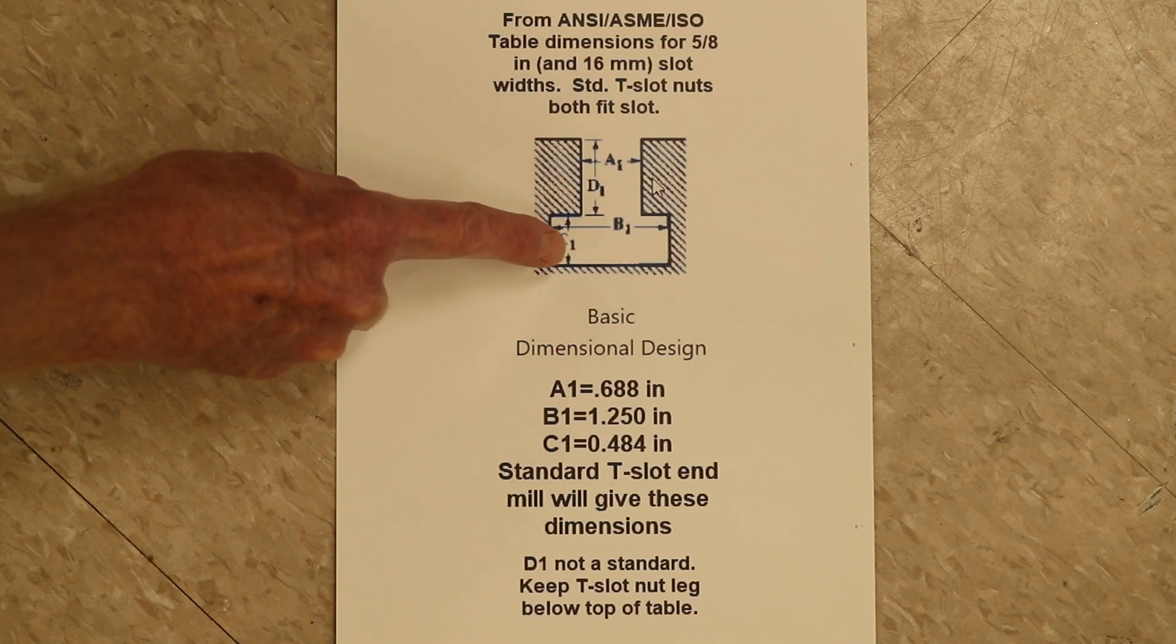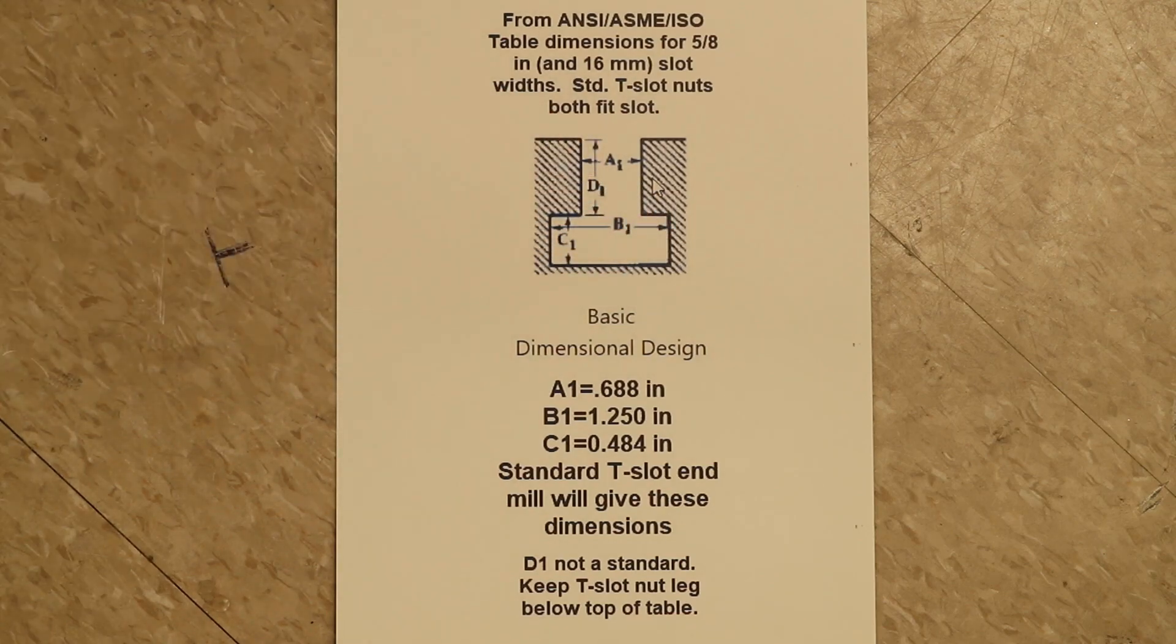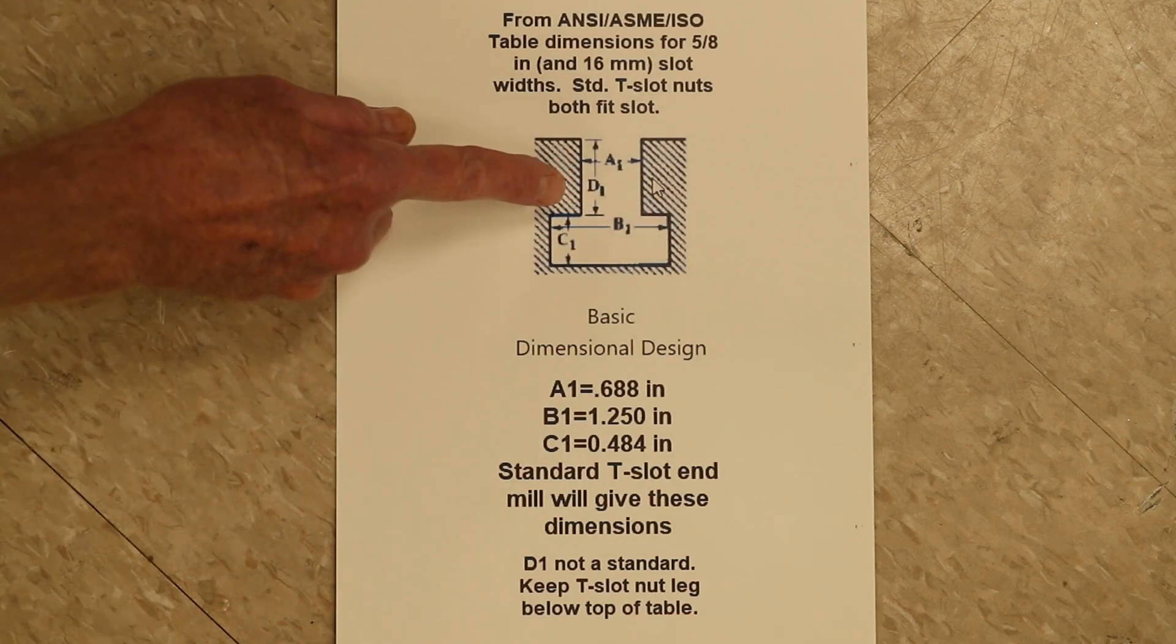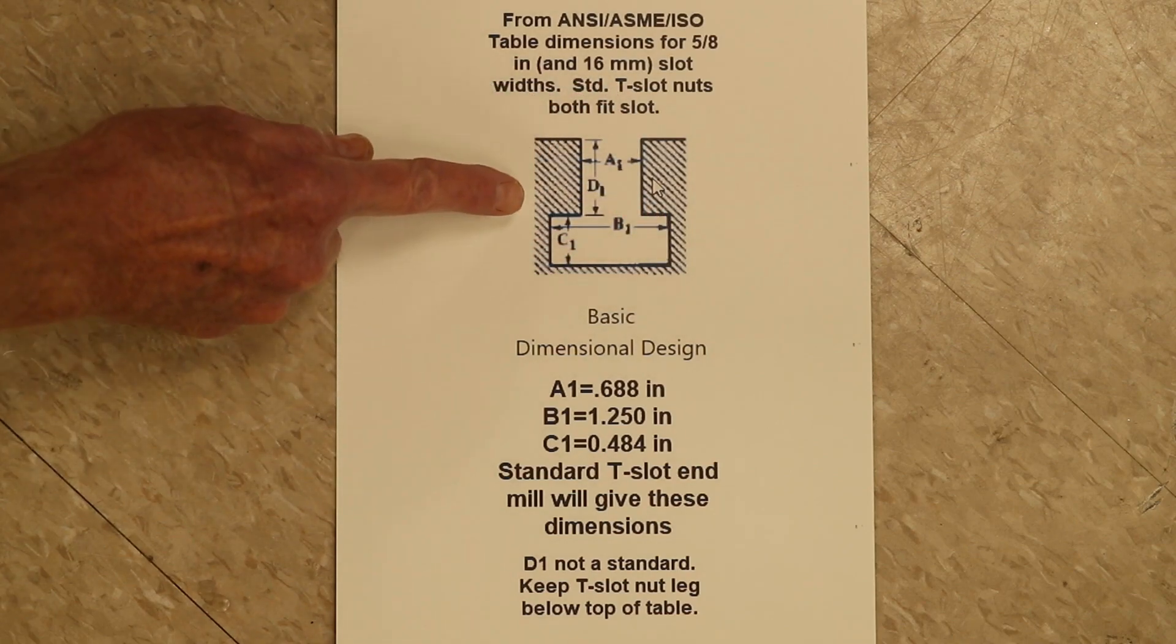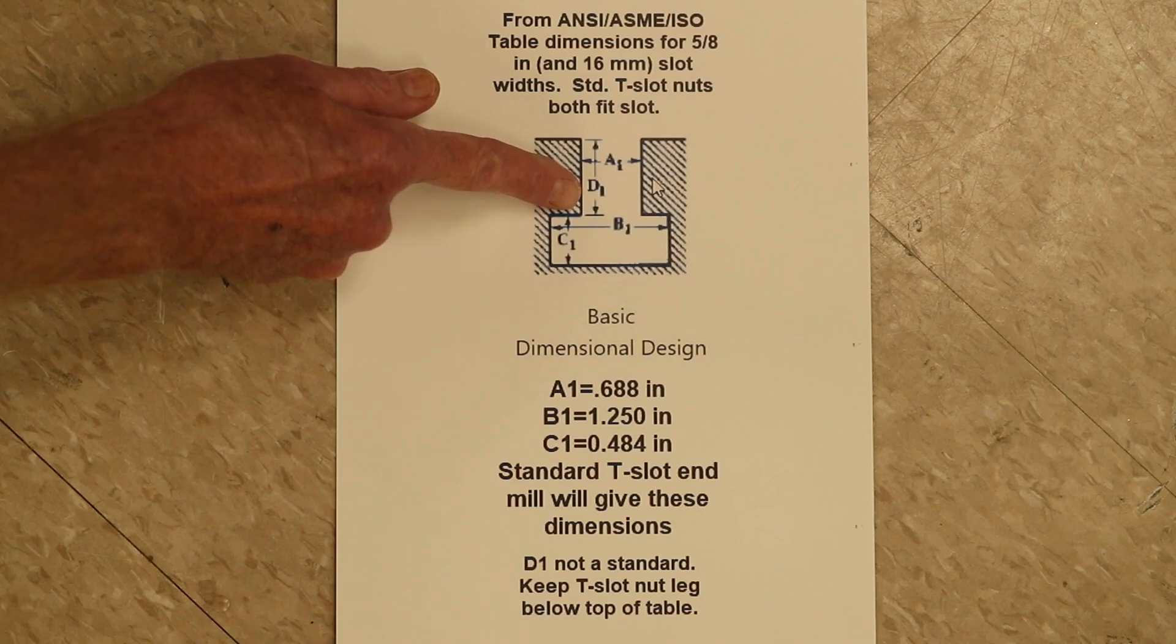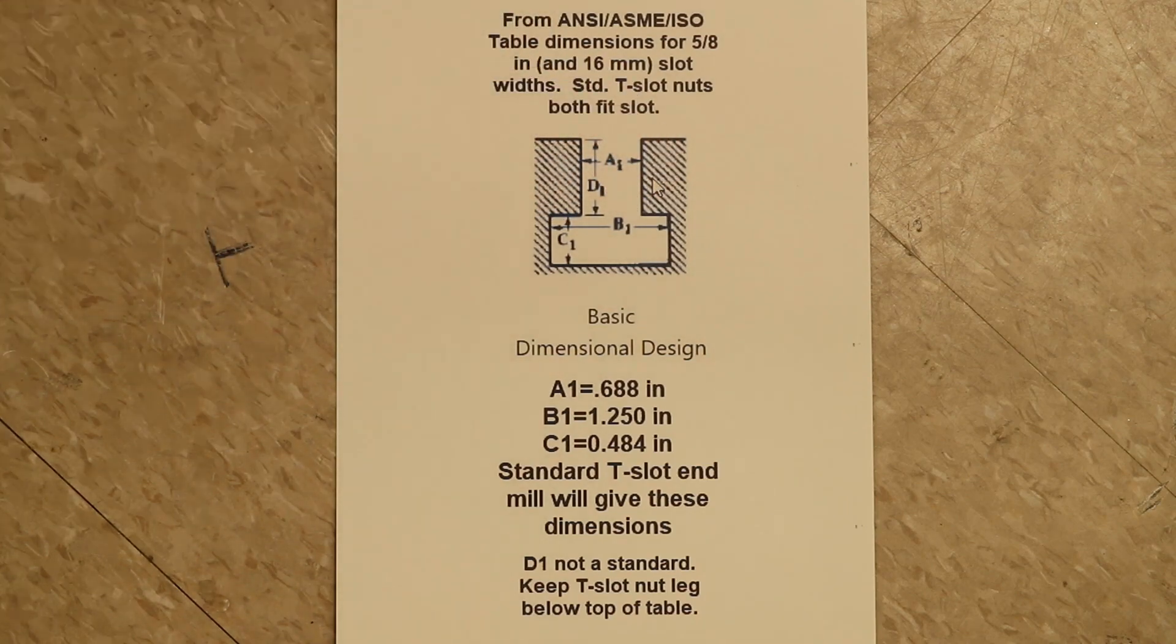The resultant shape will look like a very nice T so that the bearing surface where the T-nut pulls against at the top of C1 and on the other side will be flat and mesh with the bearing surface on the T-slot nut for maximum holding power when clamping to the table.